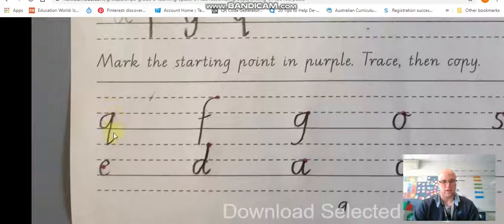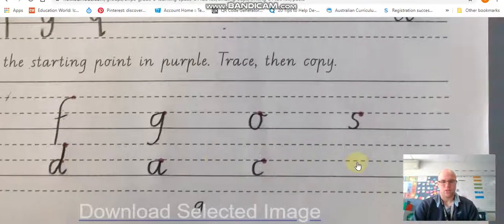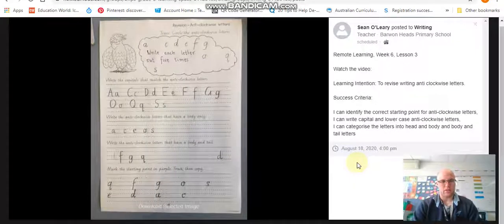Lastly your job is to get a purple which mine hasn't come out that clearly. You're going to mark the starting point and you're going to write the letters. This is my mistake. The D doesn't start there. It starts here. It goes back up and around.